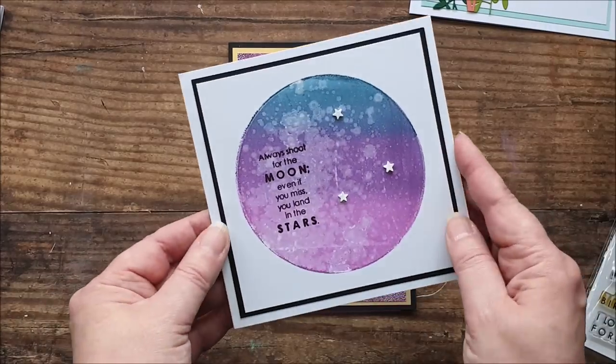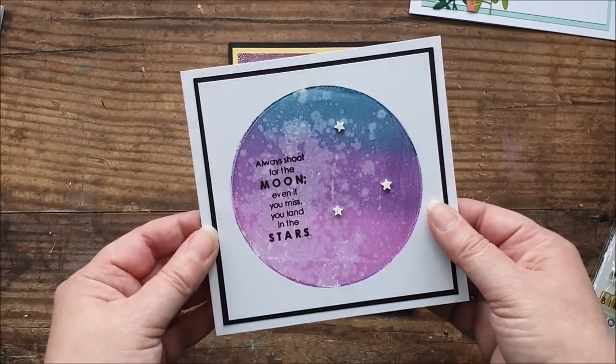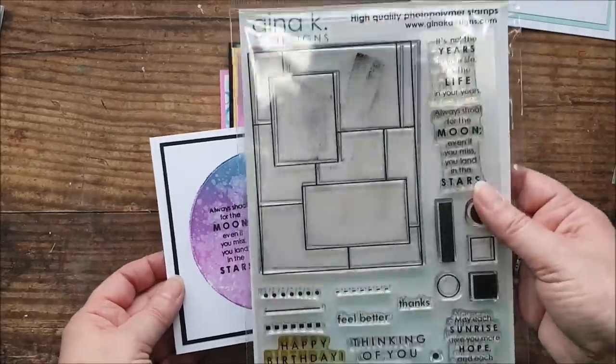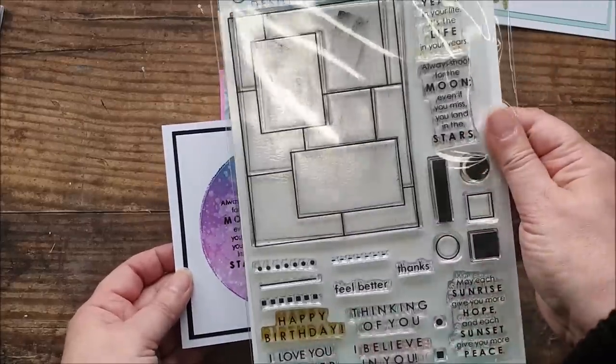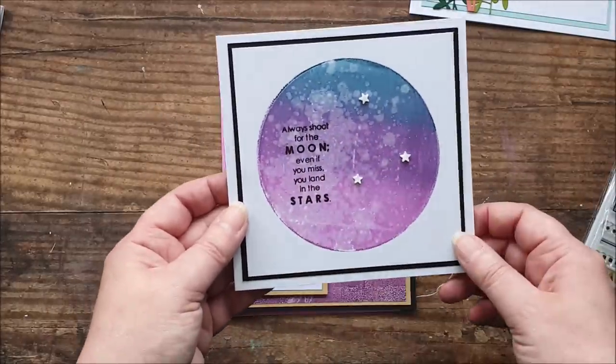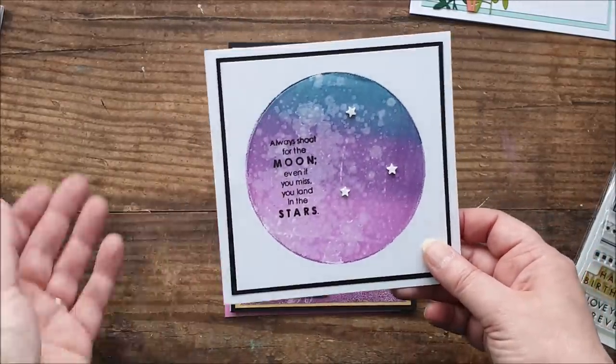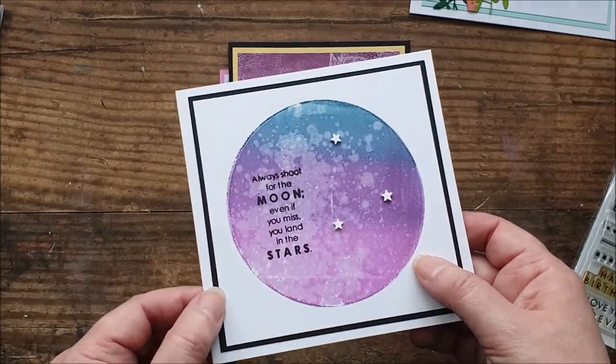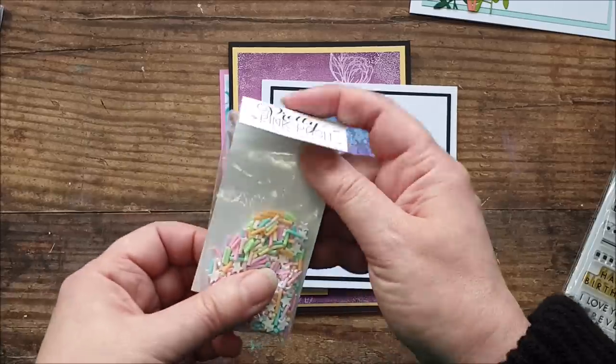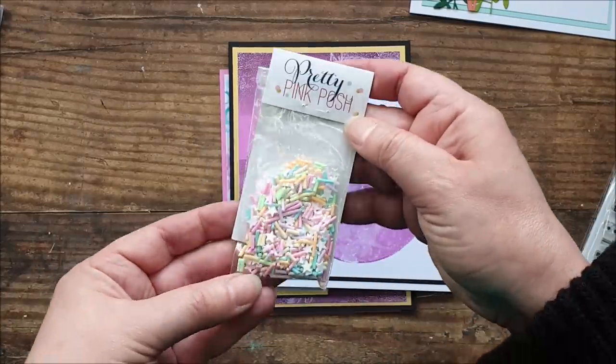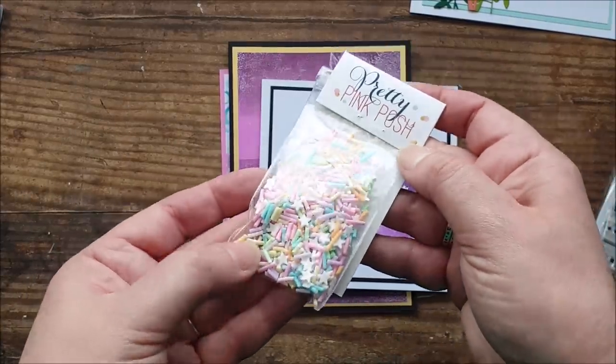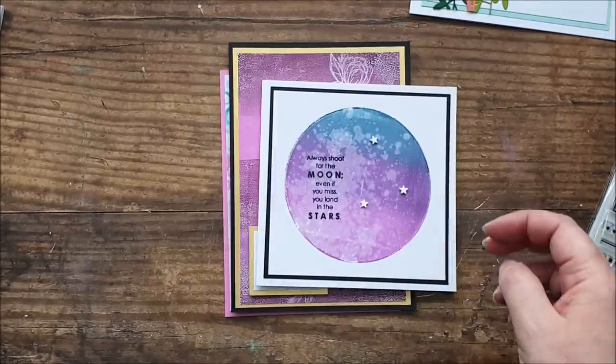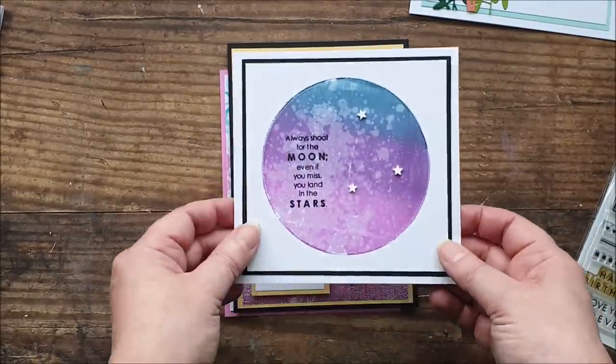Next up was our card that we used the spray of alcohol on it. And I thought quite appropriately, again, from this Inspiration Mosaic set of stamps, used the sentiment there, always shoot for the moon. Even if you miss, you land in the stars and finished it off with these ever so cute little star embellishments. For those that are interested, these are by Pretty Pink Posh and they look just like little sugar sprinkles. And that's the Unicorn Dreams set. So I just took some of the little stars out of there and stuck those on.